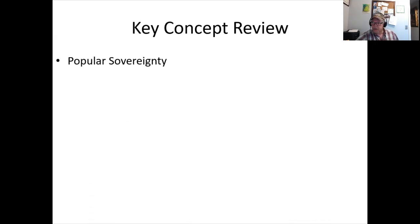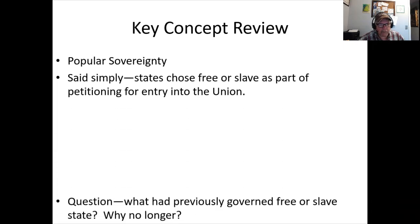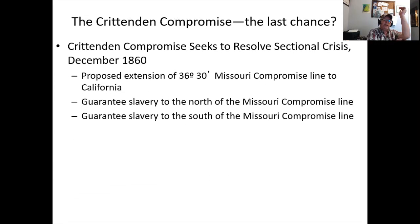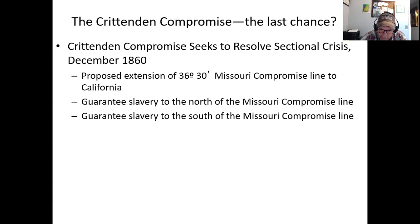Quick review: popular sovereignty means the people of a state decide whether it will be free or slave as it enters the Union. Previously this was governed by the Missouri Compromise's 36°30' line. The Kansas-Nebraska Act erases that line — now anywhere in the country can become free or slave. The Crittenden Compromise tries to reinstate the Missouri Compromise. Surprisingly, Lincoln won't go for it.